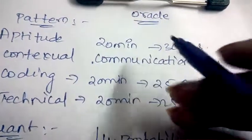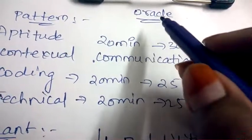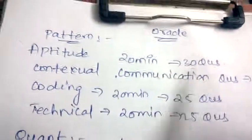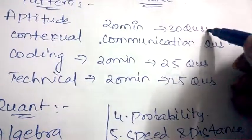Hello friends, welcome back to Best Way to Study. In this video we are going to discuss the written test pattern for Oracle company. Let's start. For aptitude, you'll be given 20 minutes to solve 30 questions.